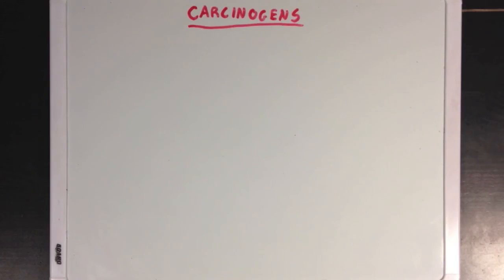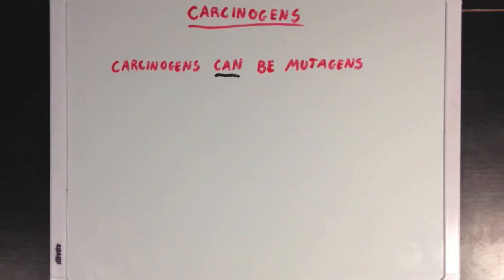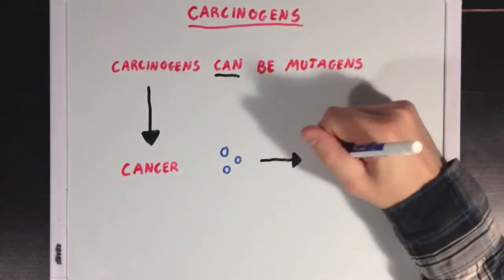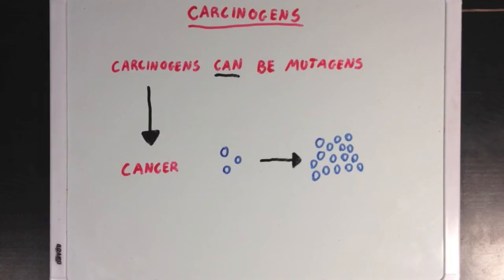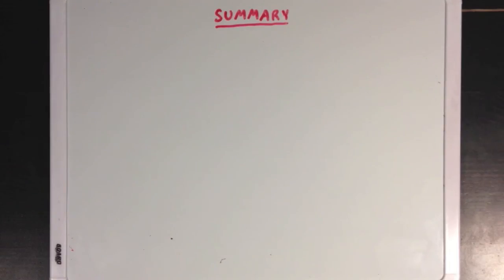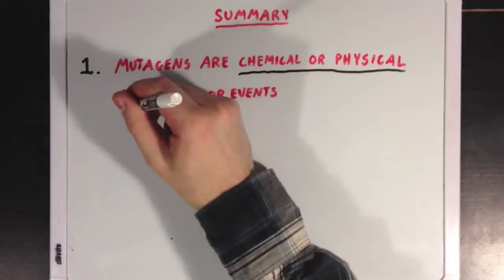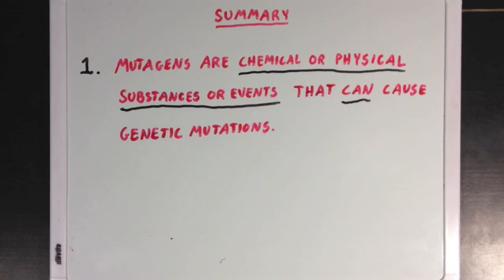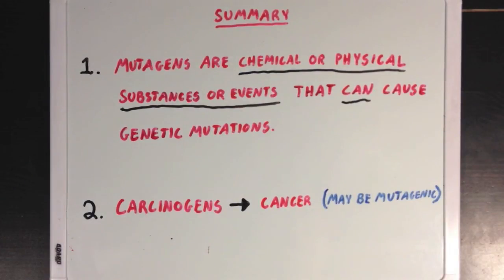A carcinogen is something that can lead to cancer — when cells divide uncontrollably and can form large masses called tumors. Carcinogens can be mutagens, but not all of them are. Some carcinogens work by making mutations in DNA that lead to cancer, but sometimes they simply increase the rate at which cells divide without affecting DNA. Examples of carcinogens include tobacco from cigarettes, asbestos, and UV radiation. In summary, mutagens are chemical or physical substances or events that increase the probability of genetic mutations, while carcinogens lead to cancer and aren't necessarily mutagenic.